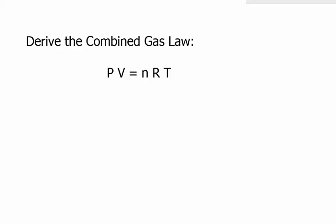Let's look at how we can get the combined gas law from PV equals nRT. Well, this is always true for an ideal gas, so let's go ahead and say this is situation 1 before the change.